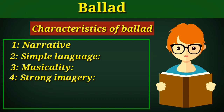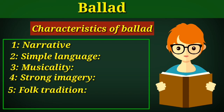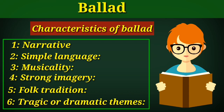Strong imagery is another characteristic — a ballad consists of vivid imagery to create a powerful impact on the reader. Next is folk tradition, meaning ballad poems are often part of folk tradition and have been passed down from generation to generation orally. Finally, tragic or dramatic themes — ballad poems have themes of tragedy, loss, betrayal, and other emotional subjects.